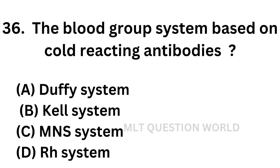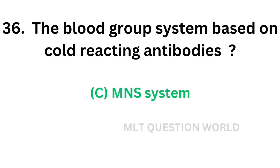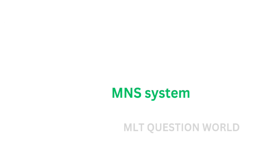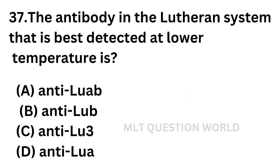Question No. 36. The blood group system based on cold reacting antibodies. Option A: Duffy system. Option B: Kell system. Option C: MNS system. Option D: RN system. The correct answer is Option C — MNS system. Antibodies of the MNS system are IgM in nature and are active below 37 degrees Celsius, so they are cold reacting antibodies.